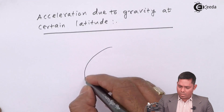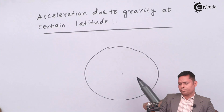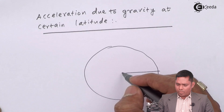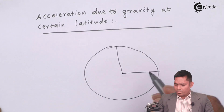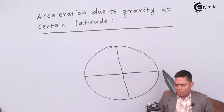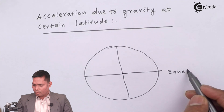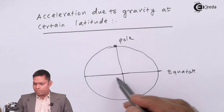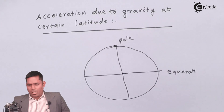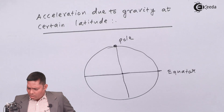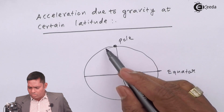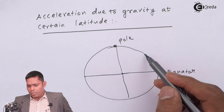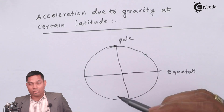I have earth drawn like this and this is the center. This is the radius and this is the equator — the greatest circle — and these are the poles: north pole and south pole. This is the equator plane. Now, when an object is kept at different locations on the planet, that is at different latitudes, the value of G will change.